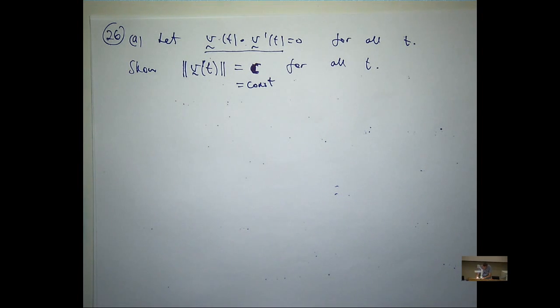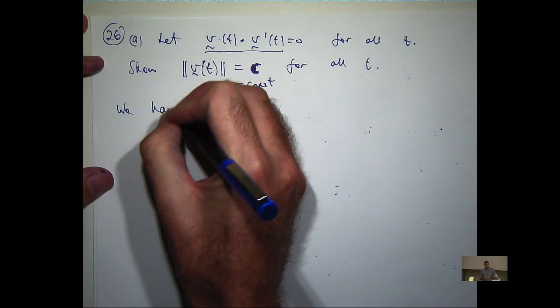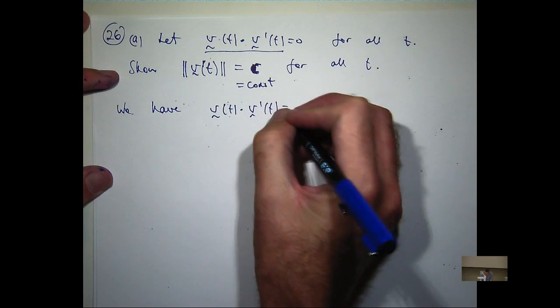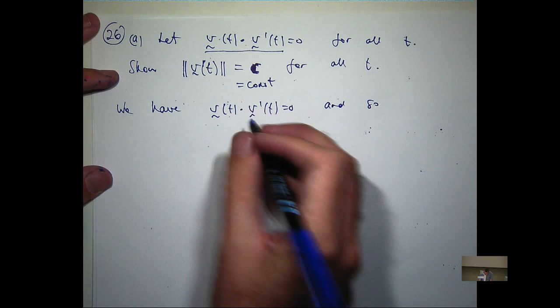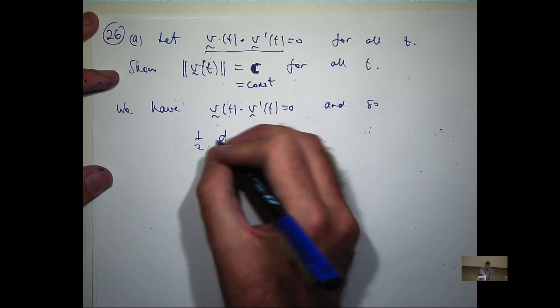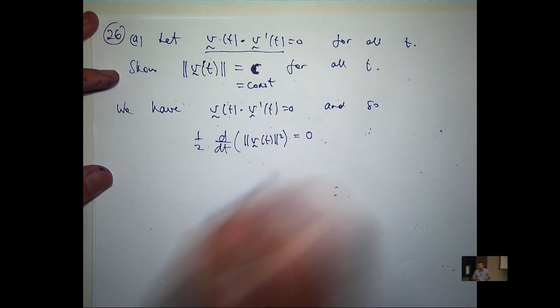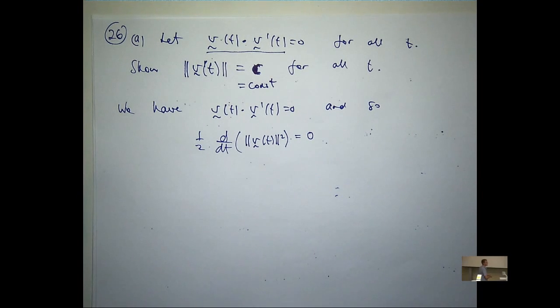Yes. Now, the left-hand side is just half times the derivative of this. Just the product rule. It's just the product rule. There's that identity again. Okay? It's a really important identity.